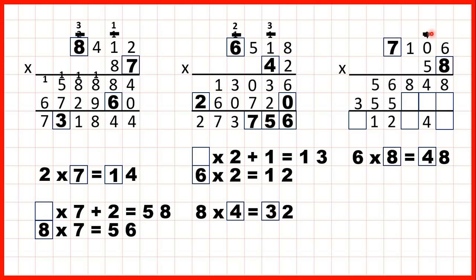So now we can cross out our working, and we know that at the end of our second answer line we always have a 0. Now, 6 times 5 is 30, so 3, 0. 0 times 5 is 0, plus 3 is 3. 1 times 5 is 5, and 7 times 5 is 35. So if we add up our answer lines: 8 plus 0 is 8, 4 plus 0 is 4. 8 plus 3 is 11, so 1, 1. 1 plus 6 plus 5 is 12, so 1, 2. 1 plus 5 plus 5 is 11, so 1, 1. And 1 plus 3 is 4.